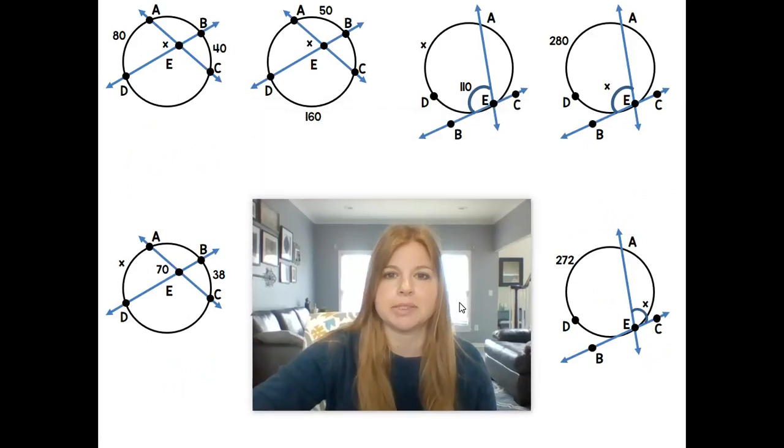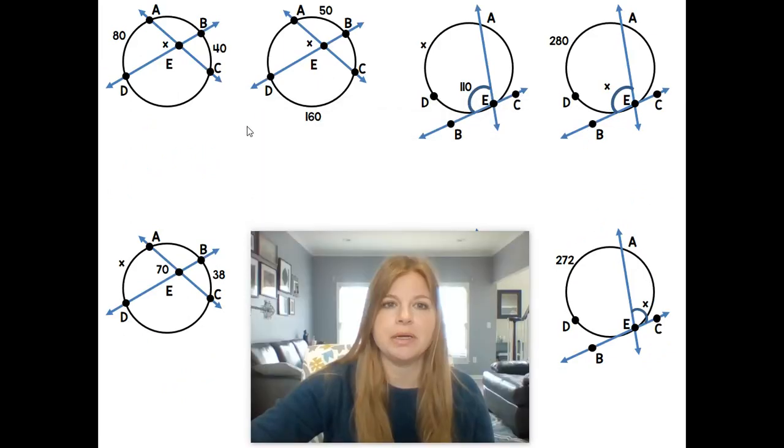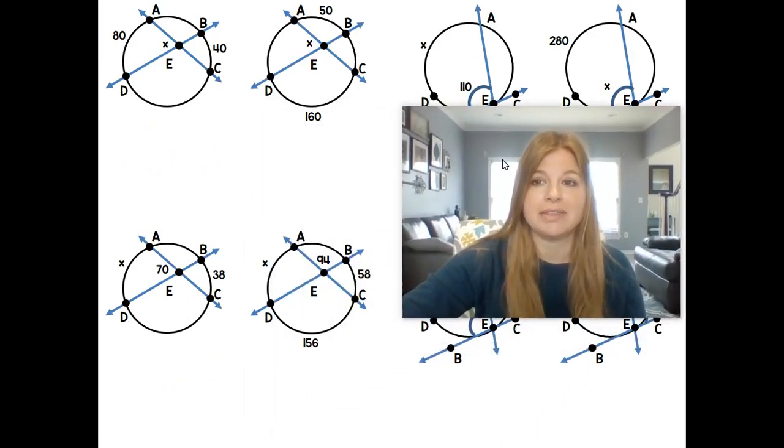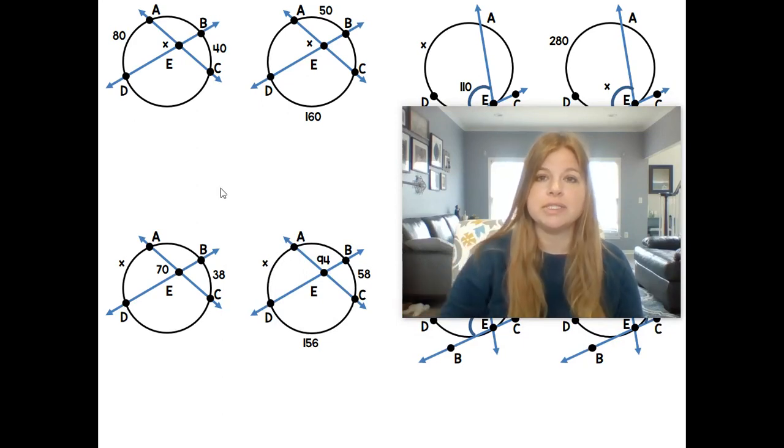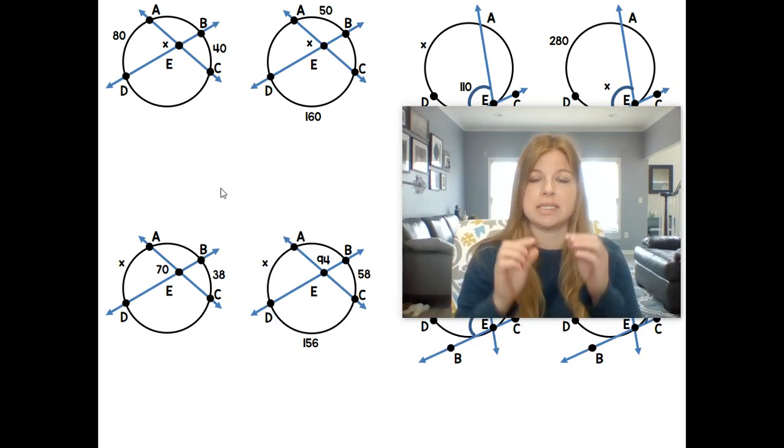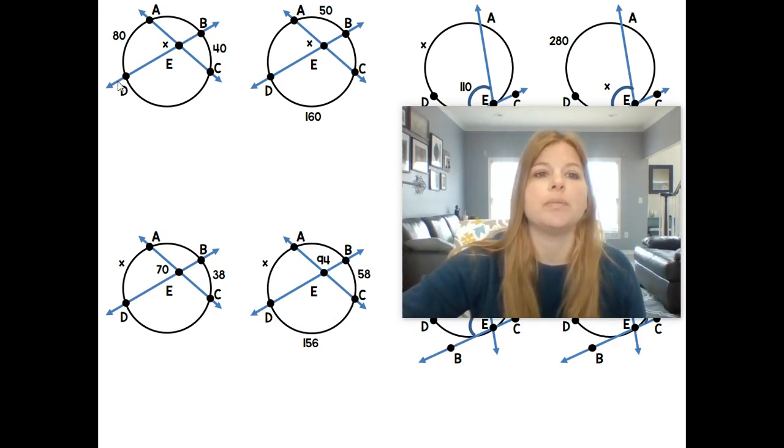Let's take a look at some practice problems. So, at the top here, I'm sorry, on the left here, we're going to look at two secants simply intersecting in the center of the circle. So here I'm looking for the measure of angle X, and I have the intercepted arc of 80, and then its opposite arc from that vertical angle of 40.